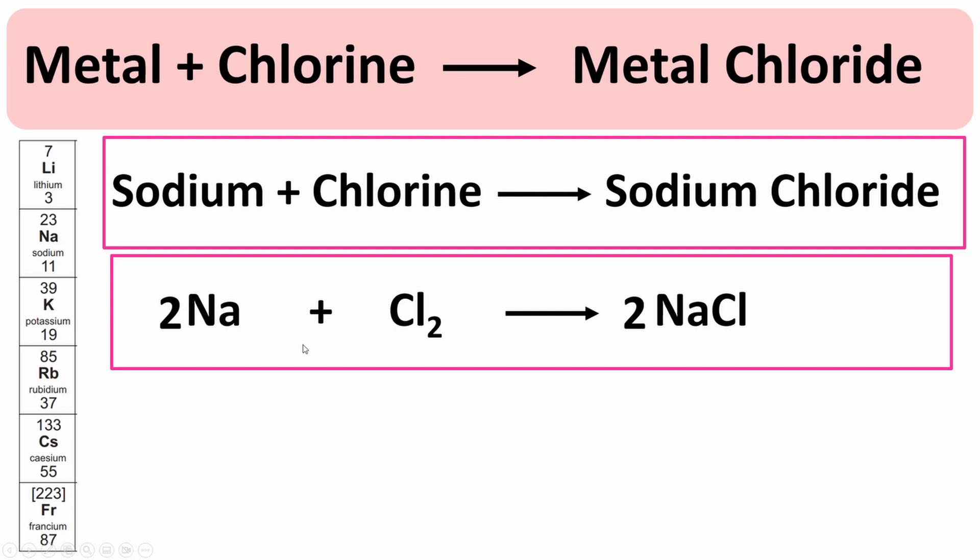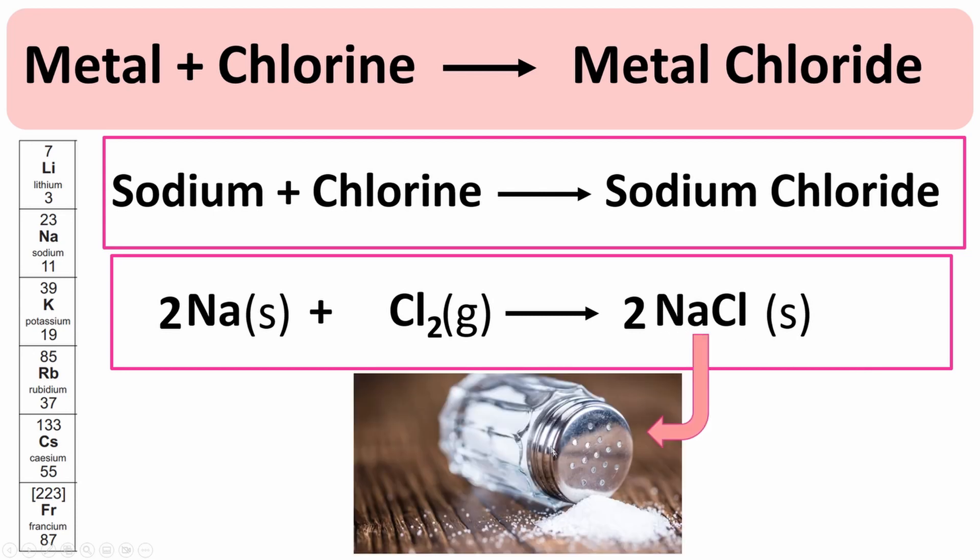We also include the state symbols, so it's the same as the previous one. Your alkali metal is always a solid, chlorine is a gas at room temperature, and sodium chloride, your salt, is always a solid. Just as a side note, sodium chloride is actually the salt that we put on our food.